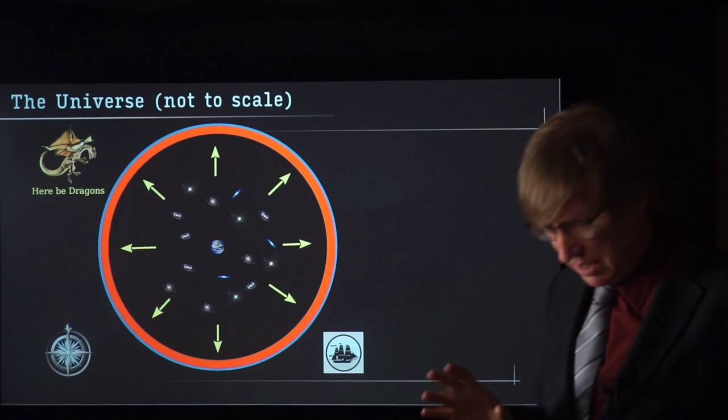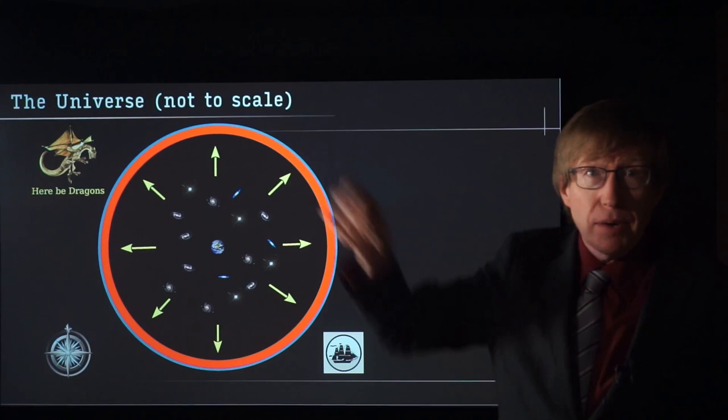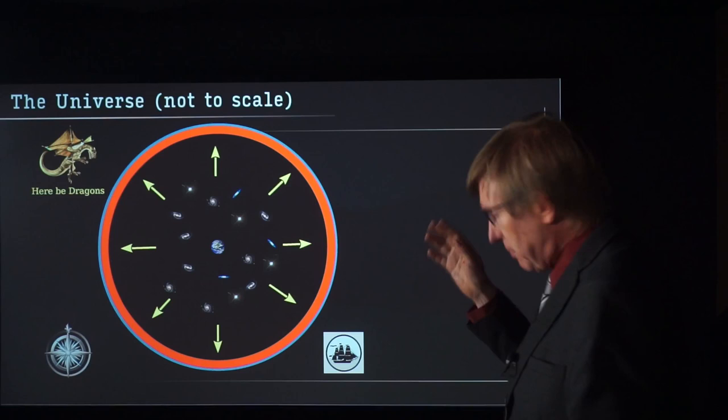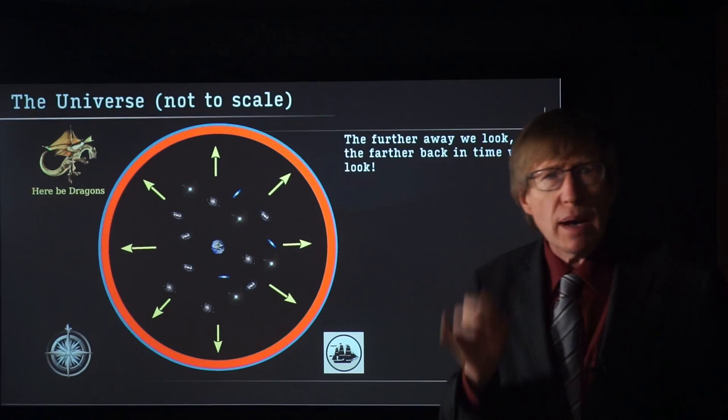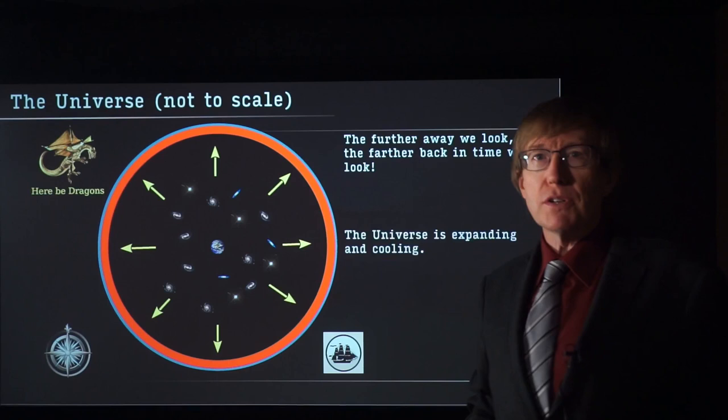As we said, the universe is expanding. We look at distant galaxies and see they're moving away from us. The farther away they are, the faster they're moving. Galaxies in every direction are moving away — it's like we're at the center of an expanding universe. And remember that really cool fact: the farther away we look, the farther back in time we look, because light takes time to travel. As we look at a distant galaxy, we see it as it was in the past.